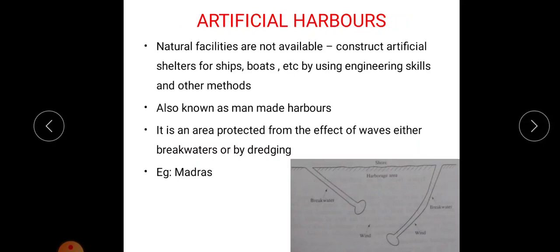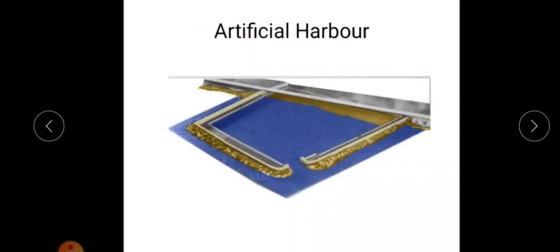Artificial harbor means natural facilities are not available here. Artificial shelters for ships, boats, etc. are constructed using engineering skills and other methods. No natural features are available here; the entire harbor is created by engineers using engineering techniques. It is also known as manmade harbor. It is an area protected from effective waves, either by breakwaters or by dredging. An example is Madras Harbor.